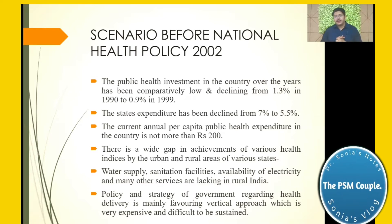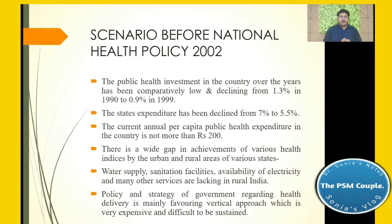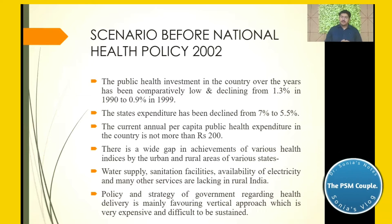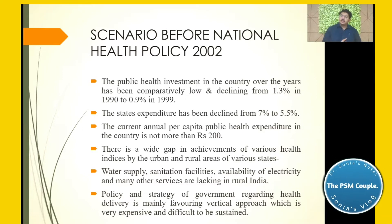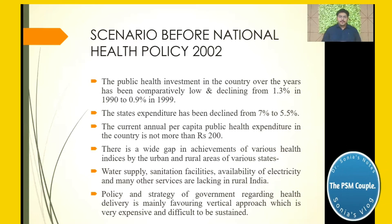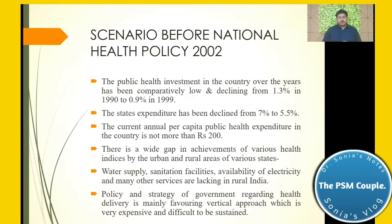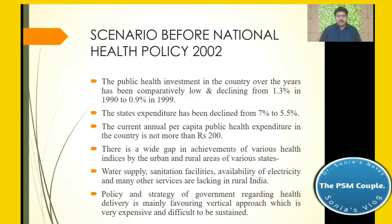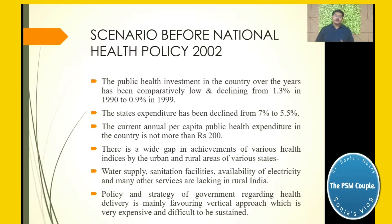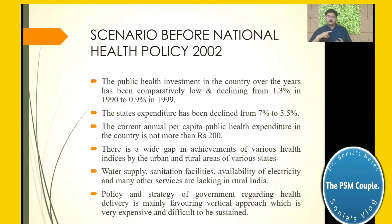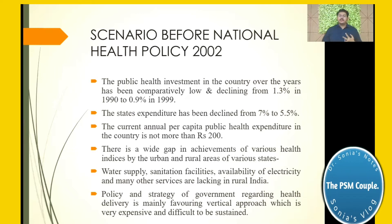Looking at the scenario before the revised national health policy: the current annual per capita public health expenditure was not more than ₹200. There is a wide gap in the achievement of various health indices between urban and rural areas across states. Water supply, sanitation facilities, availability of electricity, and many other services are lacking in rural India.